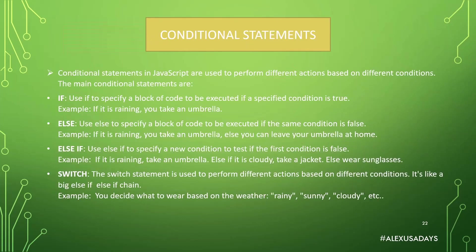Conditional statements in JavaScript are used to perform different actions based on different conditions. That means if something is happening, if something is true, if we have a certain outcome, we either move along and execute a certain thing, or we might execute another thing.